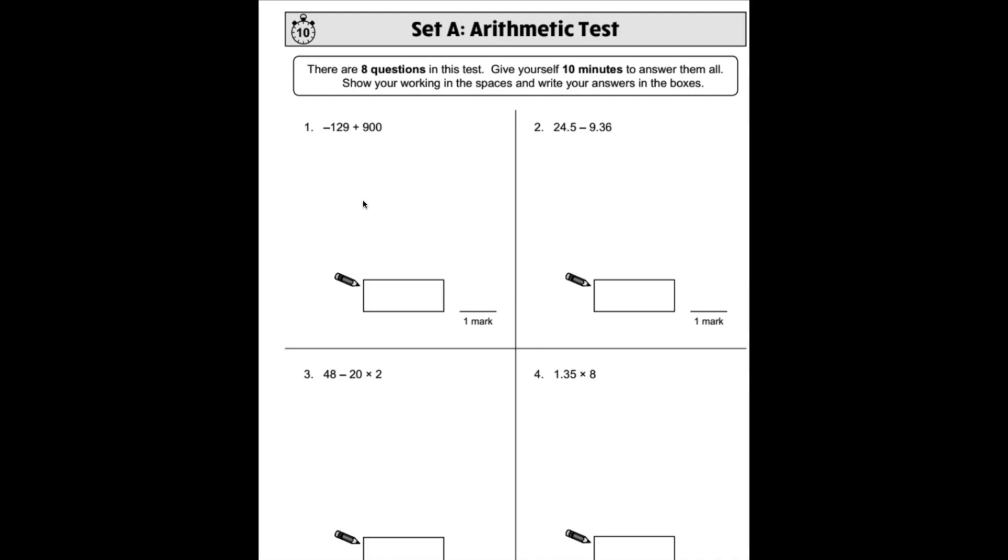Number 1: we have -129 + 900. This is thrown in there to try and catch you out. This is exactly the same as 900 - 129, and that's going to be a lot easier for us to do. So let's do it that way.